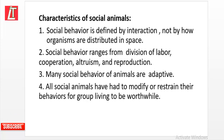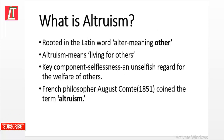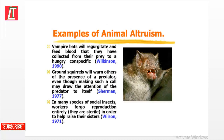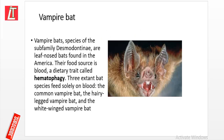Many social behaviors of animals are adaptive; all social animals have had to modify or restrain their behaviors for group living to be worthwhile. Altruism, rooted in the Latin word 'alter' meaning 'other,' means living for others. Its key component is selflessness and unselfish regard for the welfare of others. French philosopher Auguste Comte coined the term altruism.